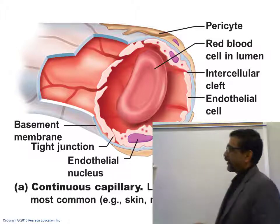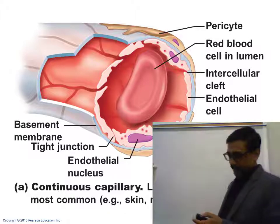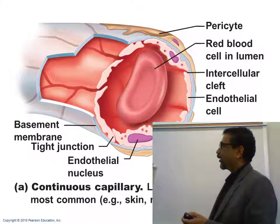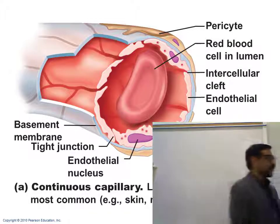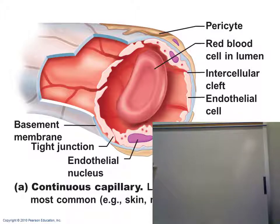Here you see the wall of a continuous capillary. You can see the clefts — intercellular clefts — between the squamous cells. This is one squamous cell with a nucleus, this is another, and in between the squamous cells you have clefts. Small solutes and fluid can pass through, but not larger solutes.